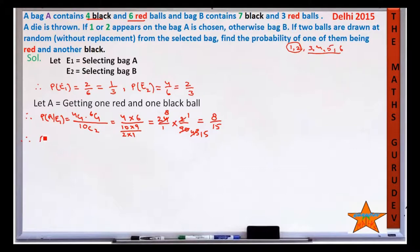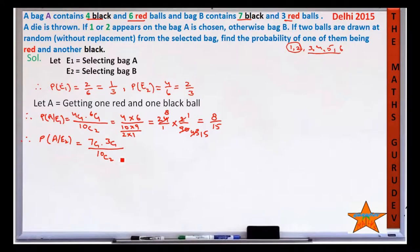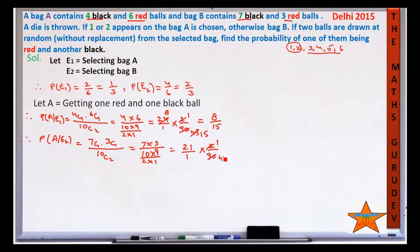Now for P(A|E2): bag B has 7 black and 3 red balls, total 10. Choose 1 black from 7 and 1 red from 3, divided by 10C2. So 7C1 × 3C1 / 10C2 = (7 × 3) / 45 = 21/45. Simplifying: 21/45 = 7/15. So P(A|E2) = 7/15.